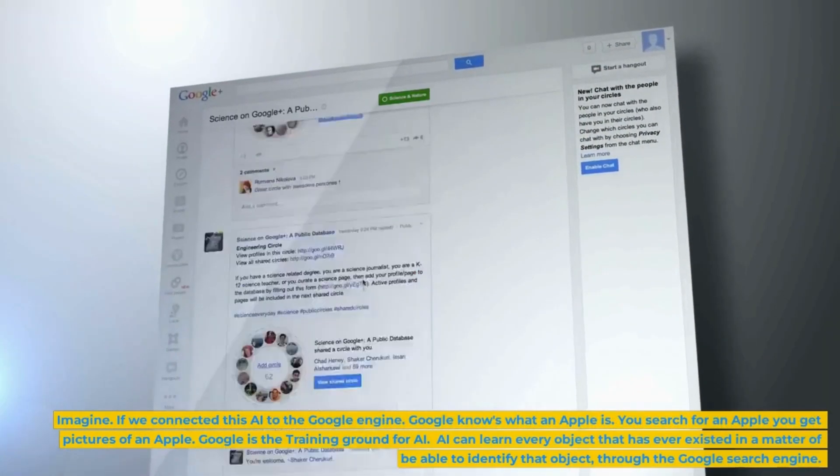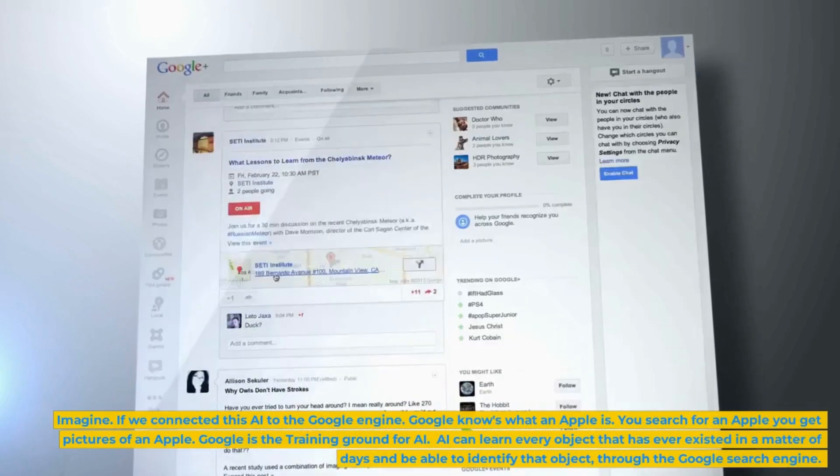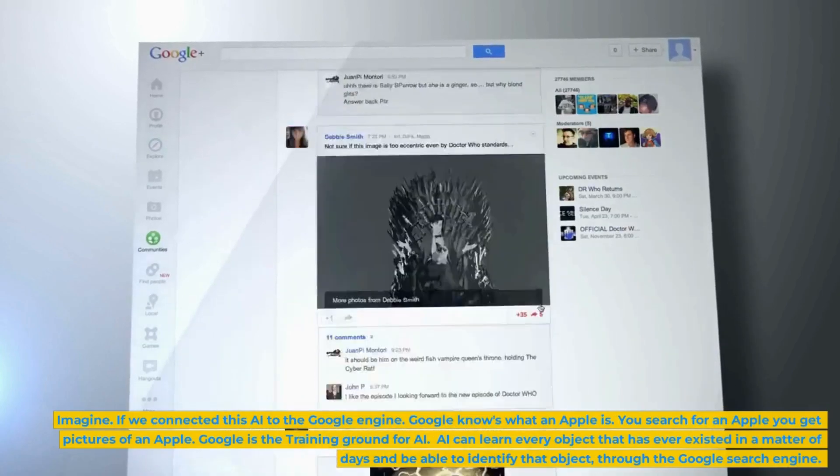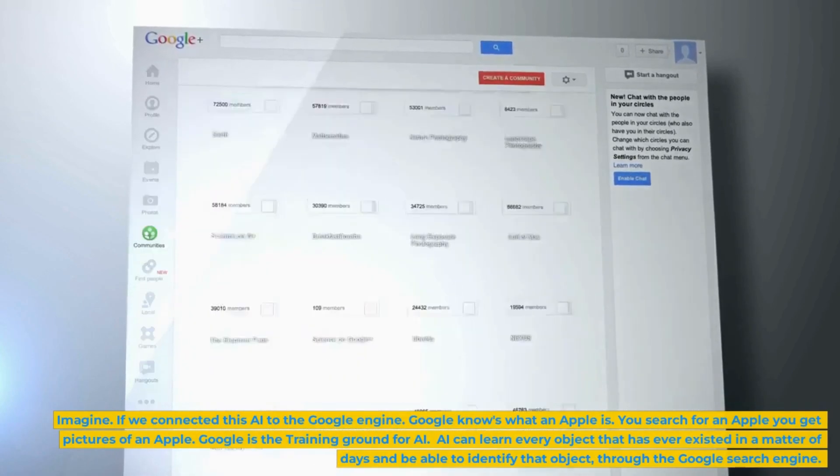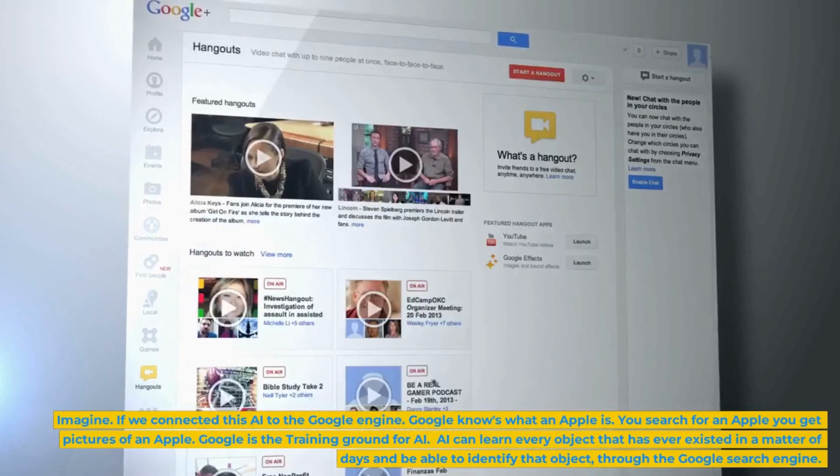Imagine if we connected this AI to the Google engine. Google knows what an apple is. You search for an apple you get pictures of an apple. Google is the training ground for AI. AI can learn every object that has ever existed in a matter of days and be able to identify that object through the Google search engine.